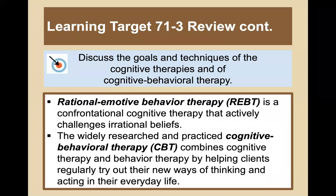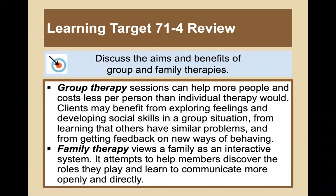Proponents of behavior modification argue that treatment with positive rewards is more humane than punishing people or institutionalizing them for undesired behaviors. REBT — rational emotive behavior therapy, developed by Albert Ellis — is a confrontational cognitive therapy that actively challenges irrational beliefs. CBT, the widely researched and practiced cognitive behavioral therapy, combines cognitive and behavior therapy by helping clients regularly try out new ways of thinking and acting in everyday life. Group sessions can help more people at lower cost, and clients may benefit from exploring feelings, developing social skills, and learning that others have similar problems. Family therapy views the family as an interactive system, helping members discover the roles they play and learn to communicate more openly and directly.